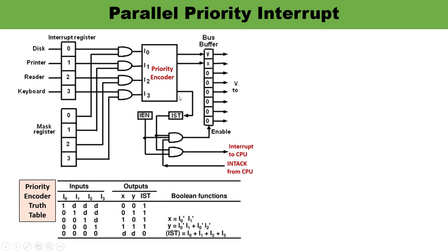Next is the Parallel Priority Interrupt, also a hardware approach. In this diagram, on the left-hand side there is an interrupt register and a mask register. The number of interrupt registers and mask registers must be the same. Four devices are connected — disk, printer, reader, and keyboard — meaning four interrupt registers (0, 1, 2, 3) and four mask registers. The lower the value, the higher the priority: zero means highest priority, three means lowest priority.